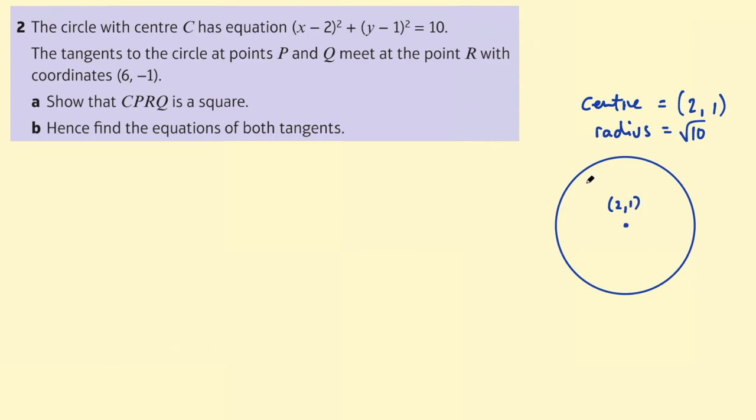The center here is at (2,1) and we have two tangents going through the point (6,-1). So let's think where that would be in relation to the center. Well, 6 on the x-axis would be somewhere over here and -1 on the y-axis would be further down. It doesn't have to be accurate but it does help if it somewhat makes sense.